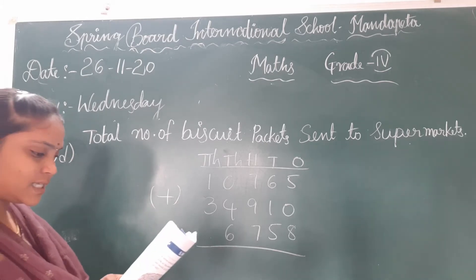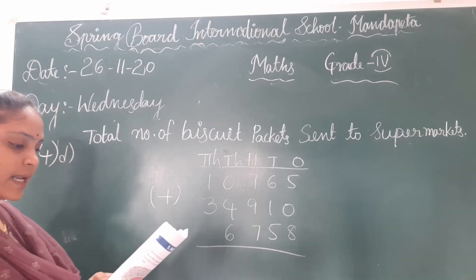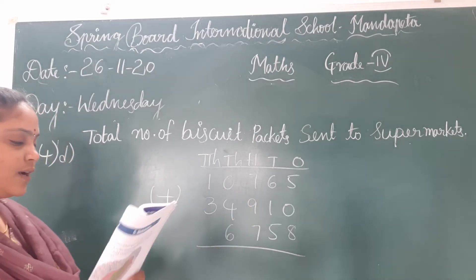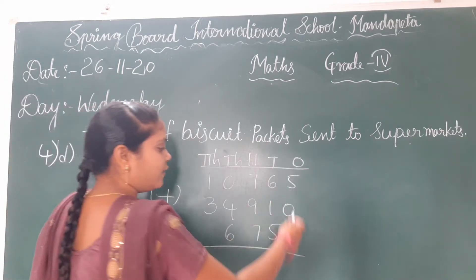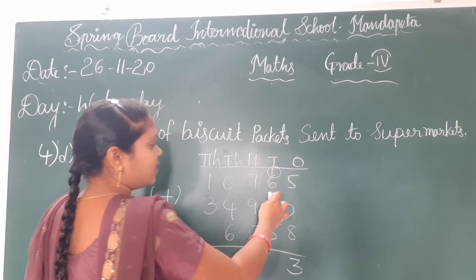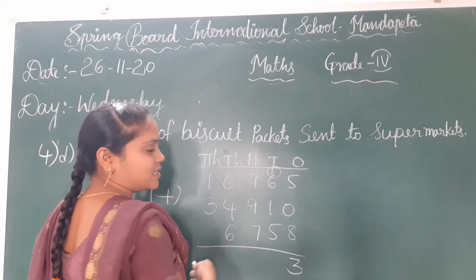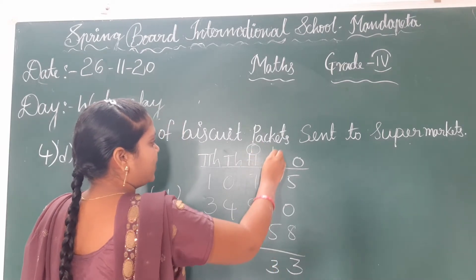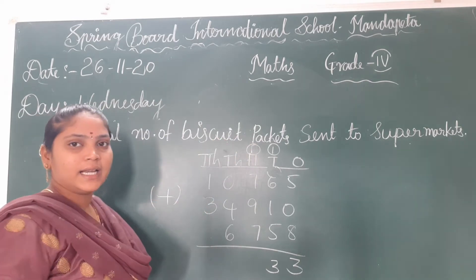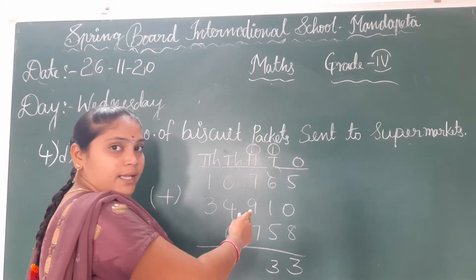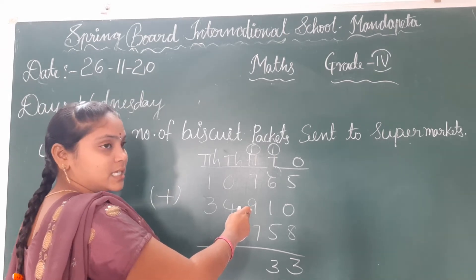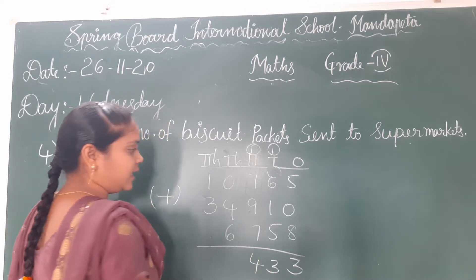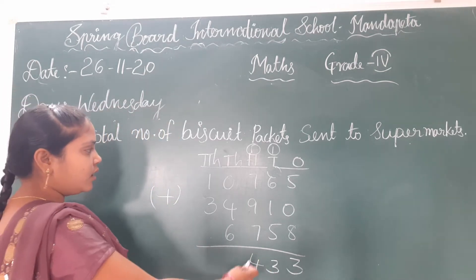To find the total, you have to add these 3 values: 10,765 to Lina market, 34,910 to Ram supermarket, and 6,758 to Tattwa. So: 5 plus 8 is 13, carry 1. Then 6 plus 1 plus 7 is 8, and 8 plus 5 is 13. Then 17 plus 7 is 24.